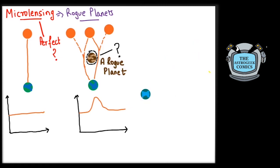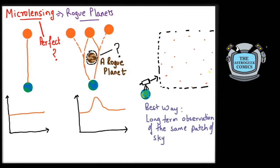So, to make this practical, long-term observations need to be made of the same patch of sky to see for signs of microlensing. Till now, we have discovered 98 exoplanets through microlensing.